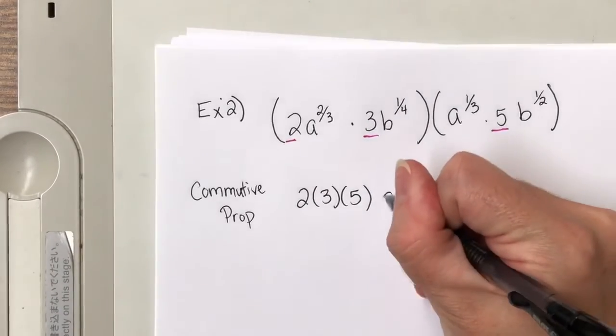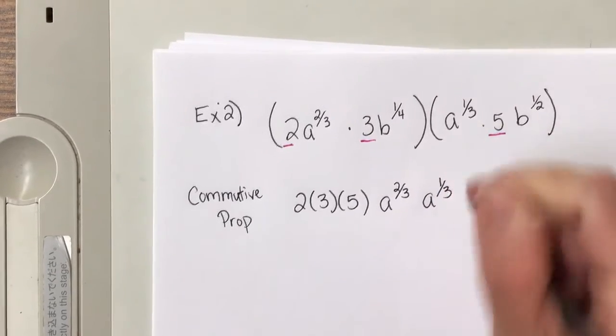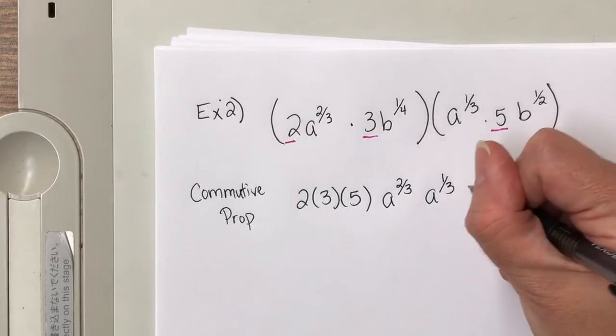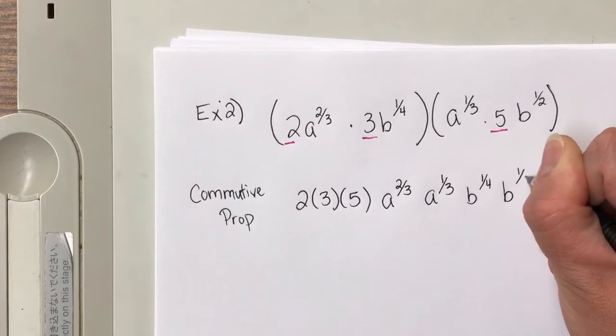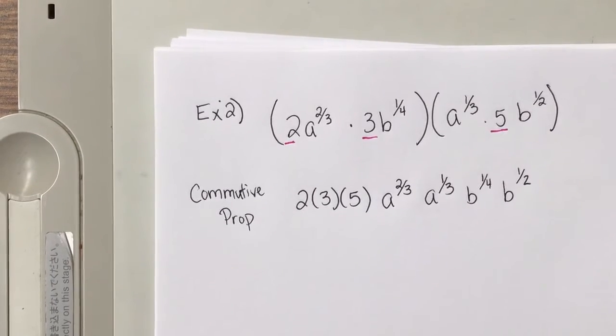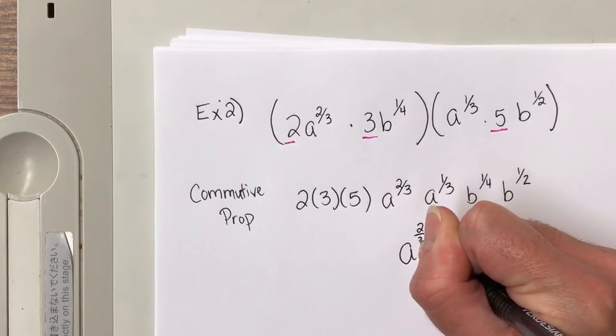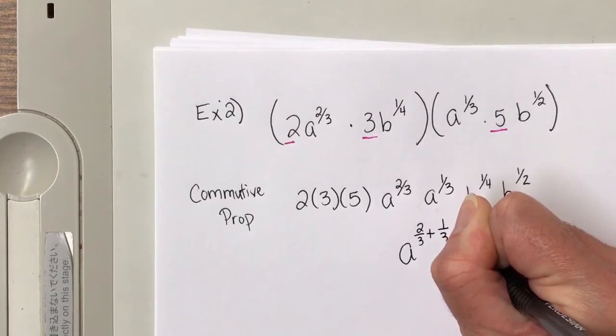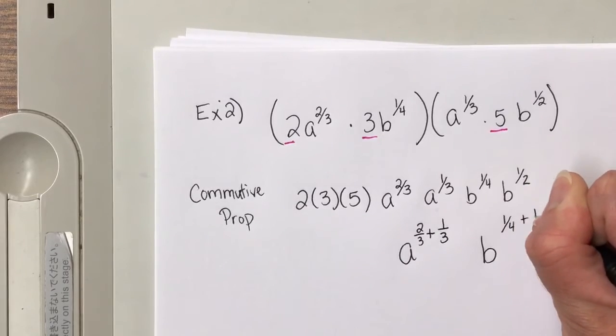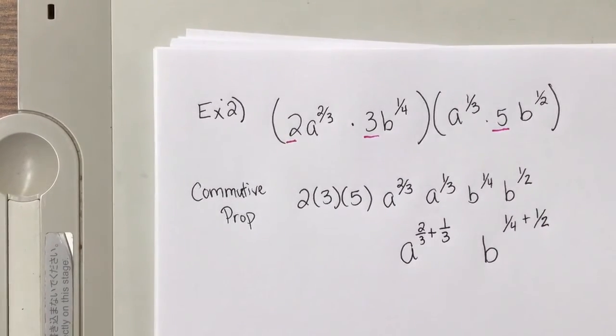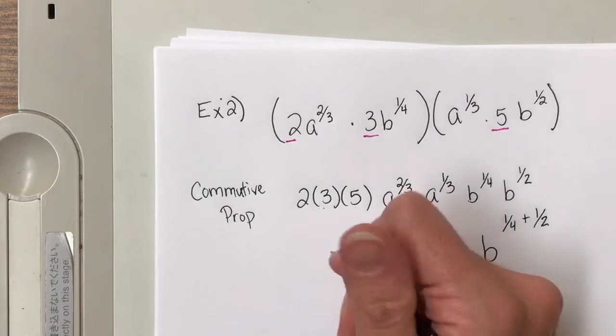Notice how I have a 2, a 3, and a 5. And the only operation going on here is multiplication. So I'm going to write those numbers beside each other: 2 times 3 times 5. Then I have an a to the two-thirds and an a to the one-third. And then I have a b to the one-fourth and a b to the one-half. So same base, add exponents. 2 times 3 is 6. 6 times 5 is 30. So this becomes 30.